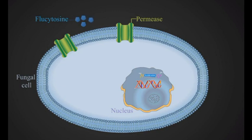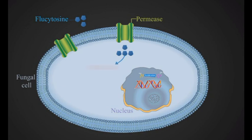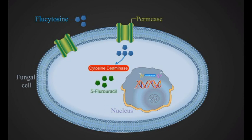Flucytosine, an antifungal agent, is taken up by fungal cells through the action of a cellular permease enzyme. Inside the cell, flucytosine is converted by the cytosine deaminase enzyme into 5-fluorouracil molecules.